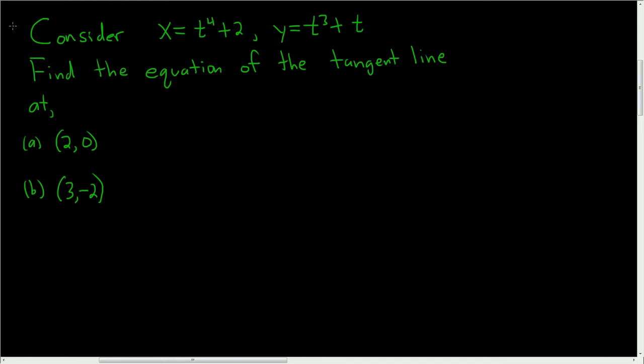We're given some parametric equations and we're asked to find the tangent line at two various points. So to find a tangent line we need a point and a slope. Recall the formula for the slope is dy/dx and that's equal to dy/dt divided by dx/dt.